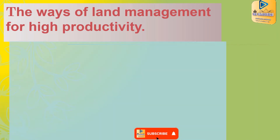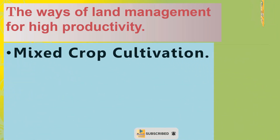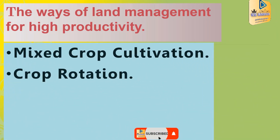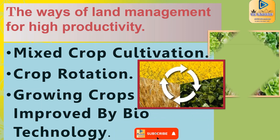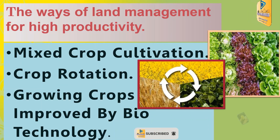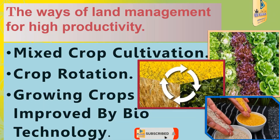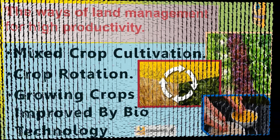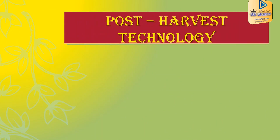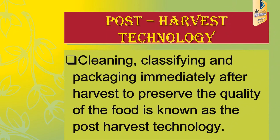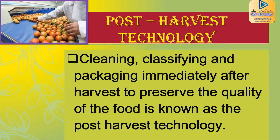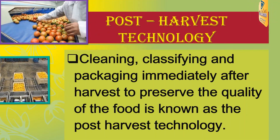The risk of cultivation can be managed through crop rotation, and growing problems are addressed by biotechnology. Post-harvest technology means the processing, classifying, and packaging of produce to retain the quality of the food.